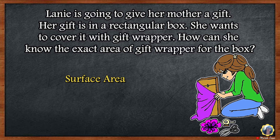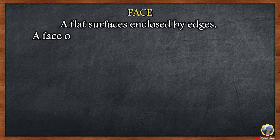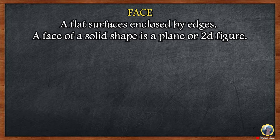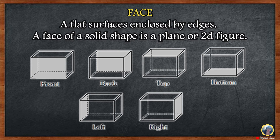we need to find the surface area of the rectangular prism represented by the gift box. To determine the surface area, you must identify what plane figure is represented by every face of it. A face is a flat surface enclosed by edges. A face of a solid shape is a plane or 2D figure.